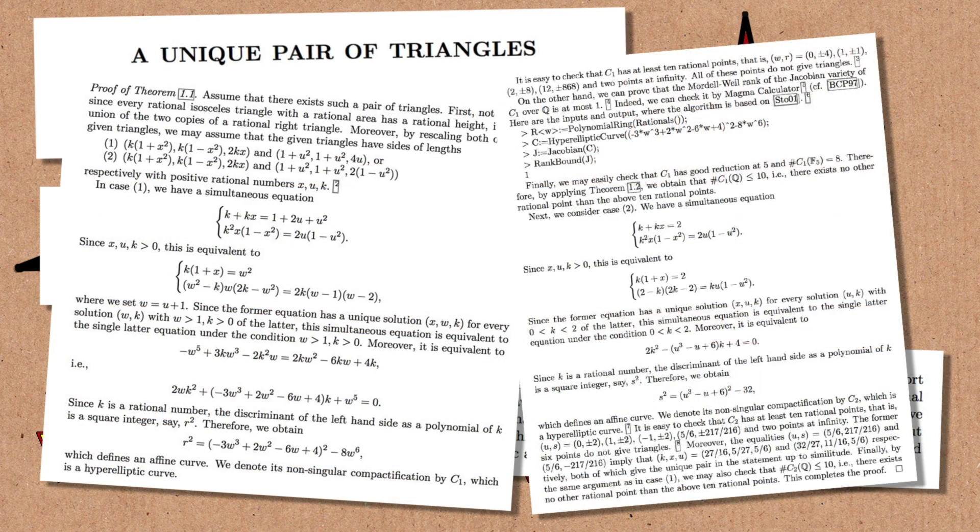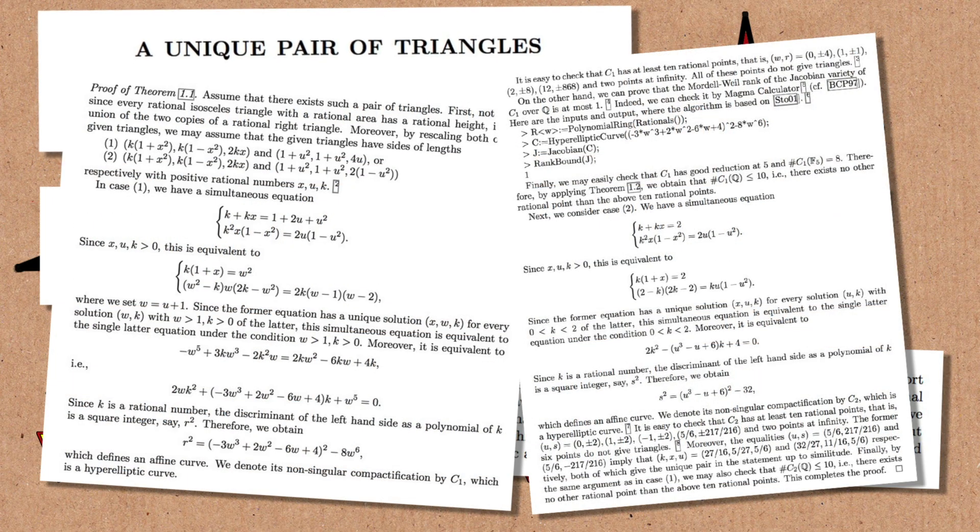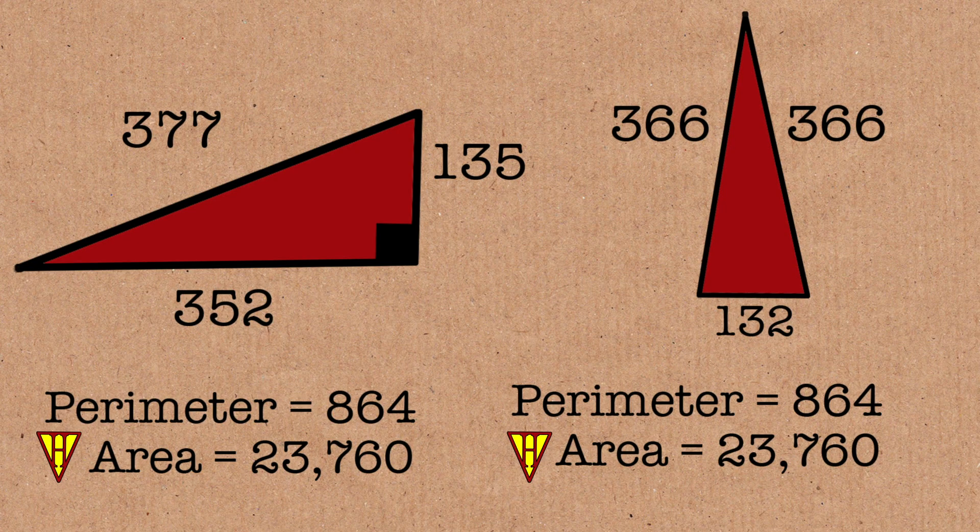So really recently, even though this stuff goes back thousands of years, this has only just been shown to be this unique pair of triangles. You can find these triangles without too much difficulty, but proving that they're the only possible pair like this was quite difficult.